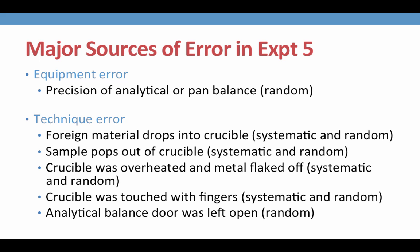Technique error are things that we can try to avoid, and you should do your best to avoid them. Keep your crucible lid on whenever you are not heating the sample. This will prevent foreign material from dropping into the crucible, such as dust or a hair. Again, make sure you do keep the crucible lid on, but slightly ajar, while it is heating, so that no sample will pop out of the crucible. Remember to always move your Bunsen burner flame around the crucible to prevent it becoming overheating and oxidizing.